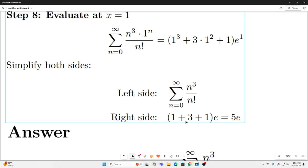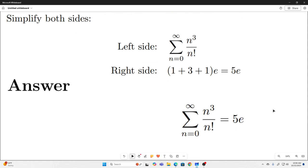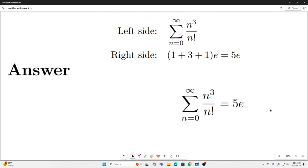And on the right-hand side, we just end up with 5e. So the answer is the sum as n goes from 0 to infinity of n cubed over n factorial is exactly 5e.